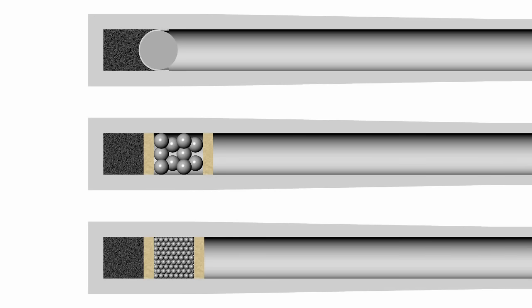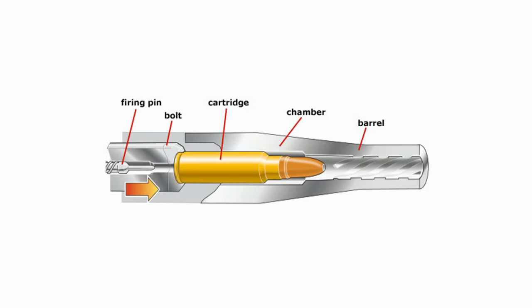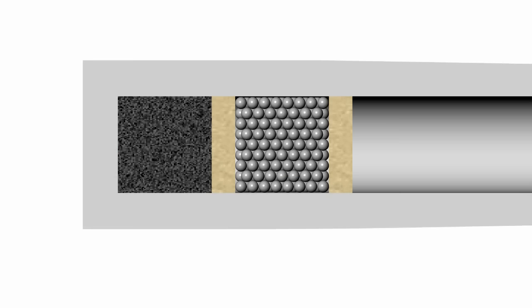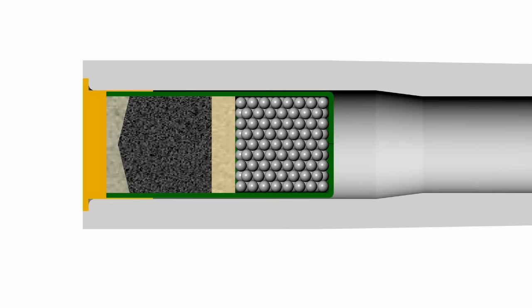In addition to single projectiles, these old smoothbore firearms could be loaded with multiple smaller shot if an application called for it, even if they weren't specifically designed as fowling pieces. While modern rifle barrels have seen significant technological advancements and design changes since the smoothbore days, shotgun barrels have remained virtually unchanged apart from some material and structural improvements, and are still usually defined by gauge today.